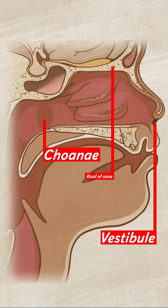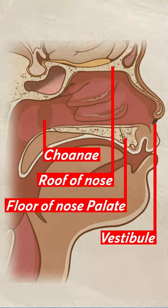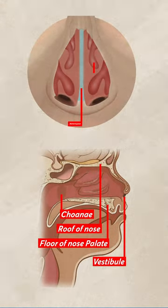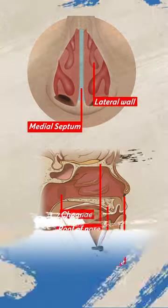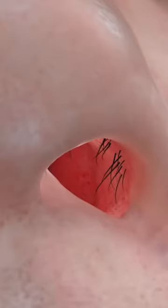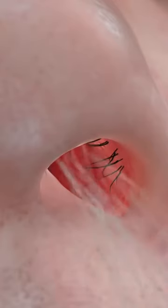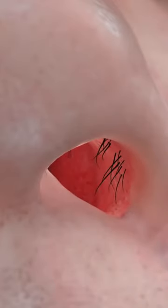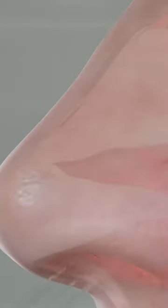Of course there are more details to each and every structure — the vestibule, the choana, the roof, the floor, the medial wall, and the lateral wall. But as a beginner in understanding the anatomy, this is the first basis for understanding the walls of the nose. Now let's understand the anatomy of the external nose.